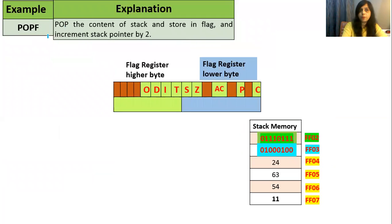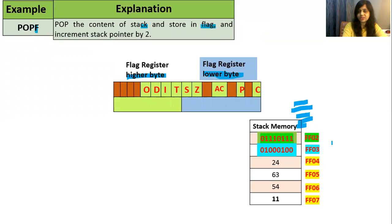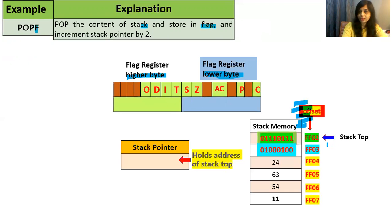Next is POPF — pop the contents of the stack and store in the flag register. F stands for flag register. This is the higher byte of the flag register and this is the lower byte. Stack memory is filled up to FF02, and this is the stack top. The stack pointer holds the address of the stack top, so it holds FF02.